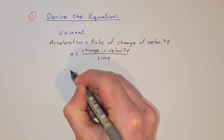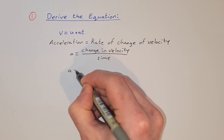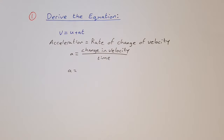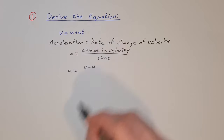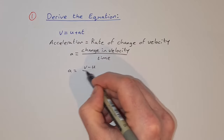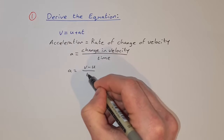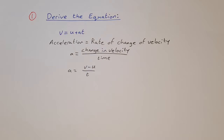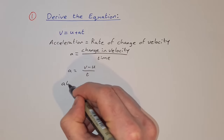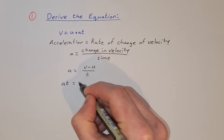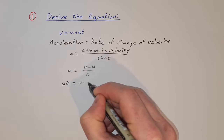The change in velocity is going to be our final velocity minus our initial velocity, so it's v minus u, and time is t. So we multiply across by t to get at = v - u.